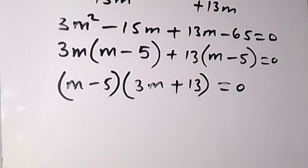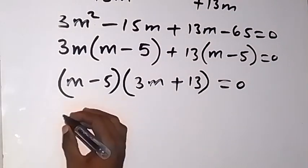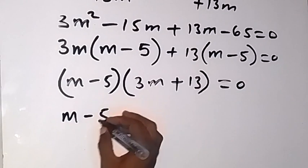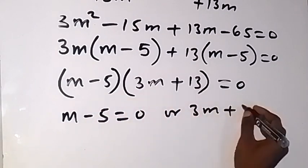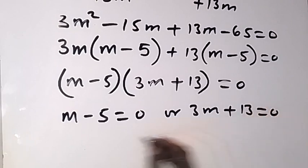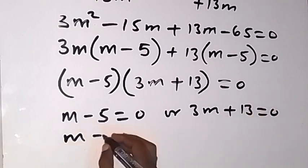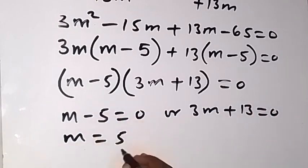So either of them could be zero. We now have m - 5 = 0, or 3m + 13 = 0. When you solve this, m = 5, taking -5 to this side is a solution.